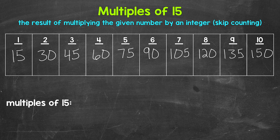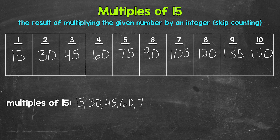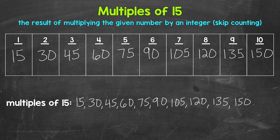And you'll notice we are just counting up by 15. Like I mentioned earlier, another way to think of multiples is to skip count. So we have 15, 30, 45, 60, 75, 90, 105, 120, 135, 150, and those continue on.